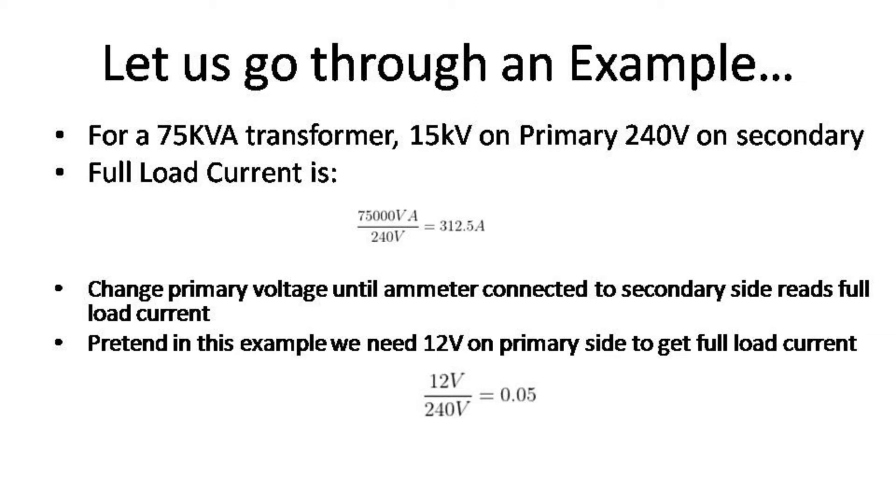Now first of all, let's find out our full load current. Our full load current can simply be 75 kVA divided by 240, which equals 312.5 amps.